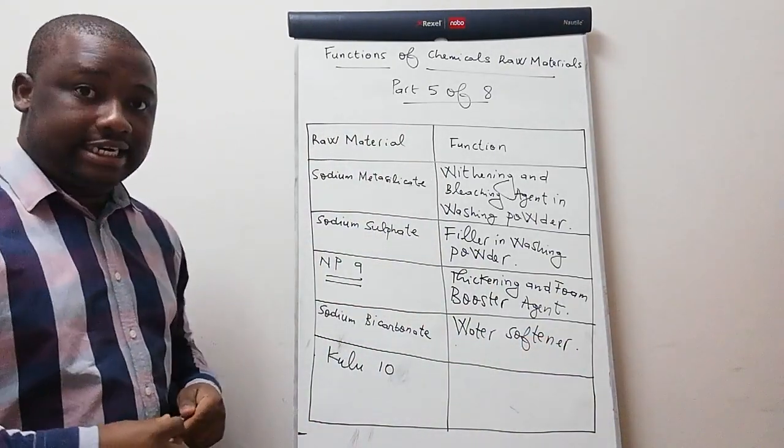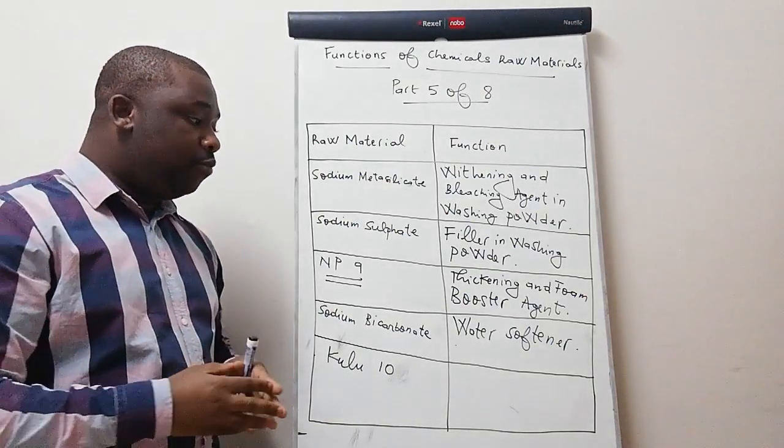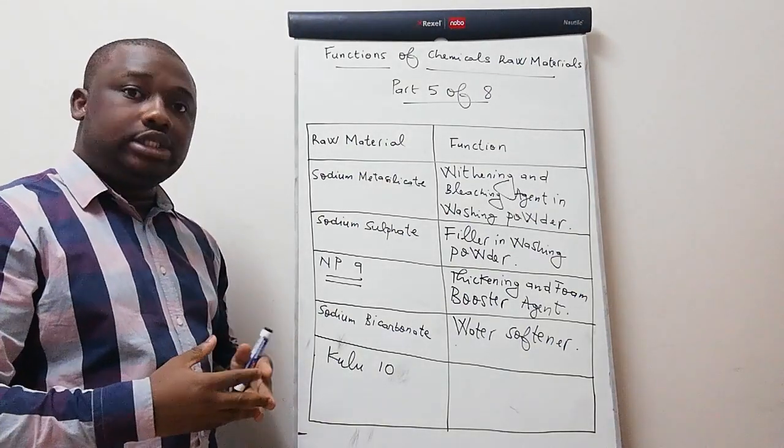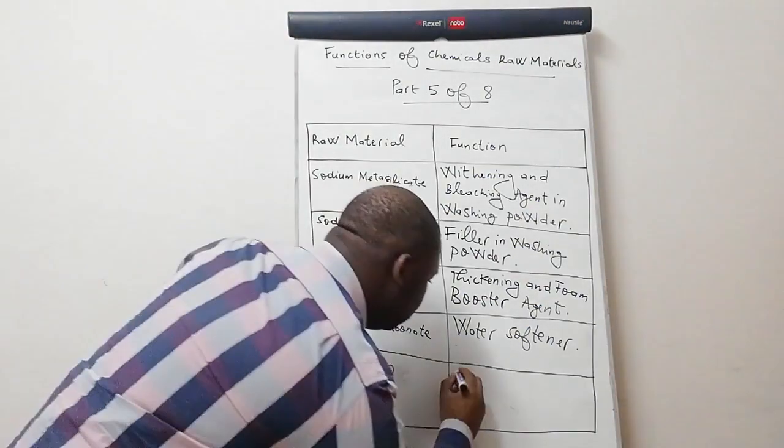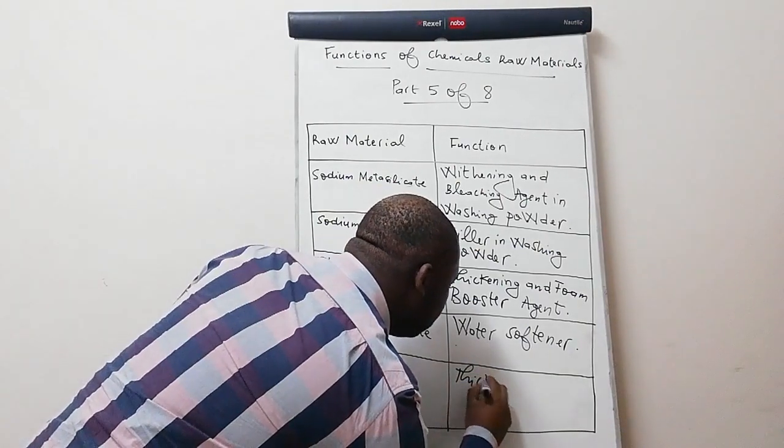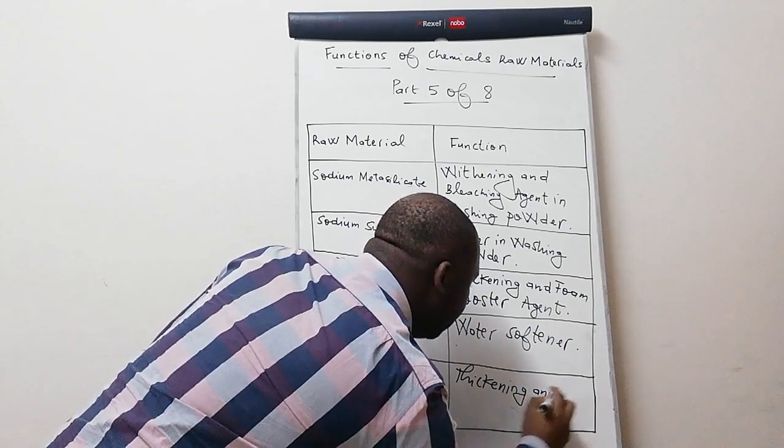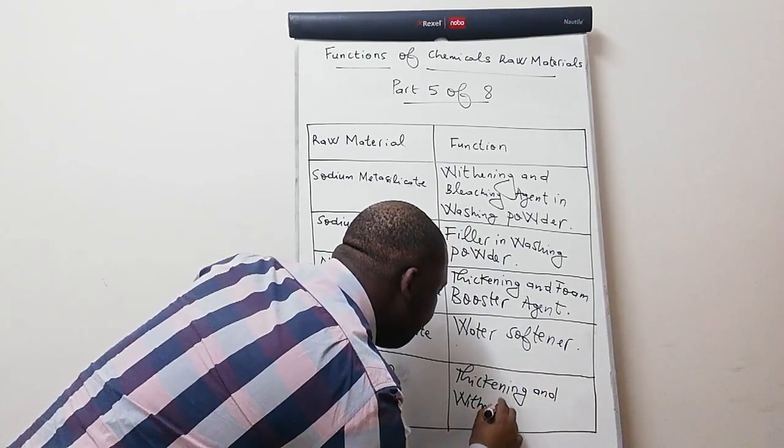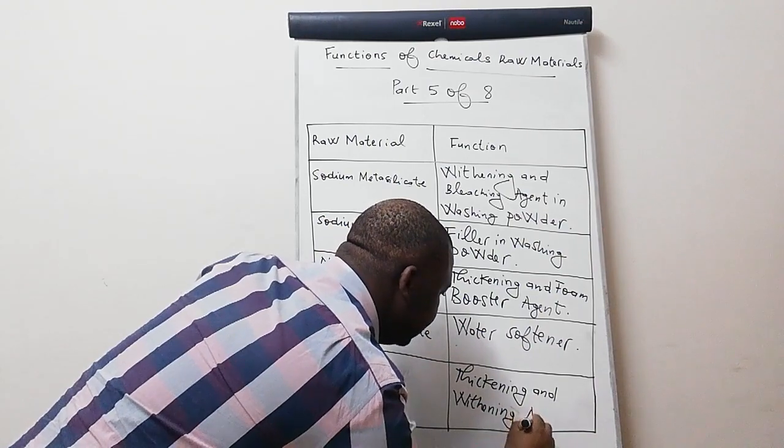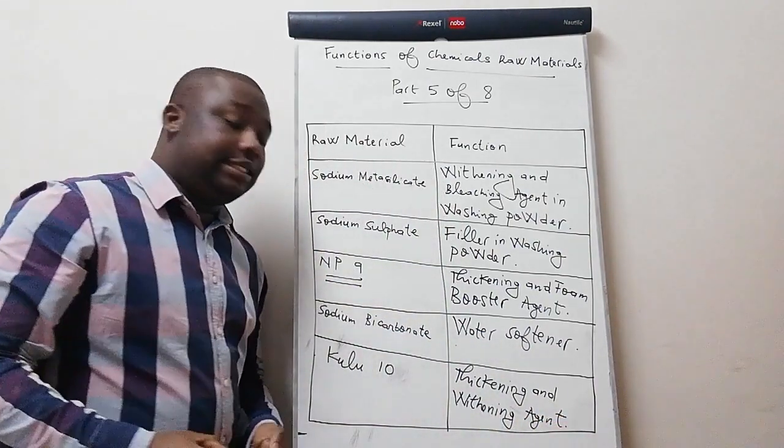Then the next ingredient is the gluten. What is the gluten used for? The gluten is used as thickening and whitening agent.